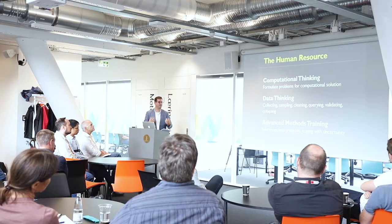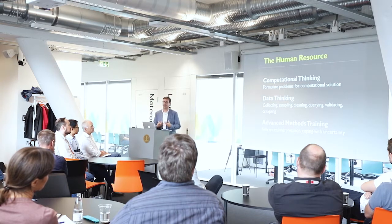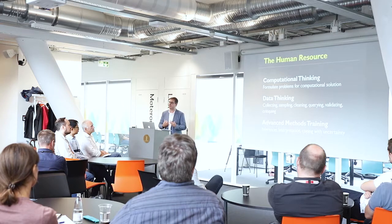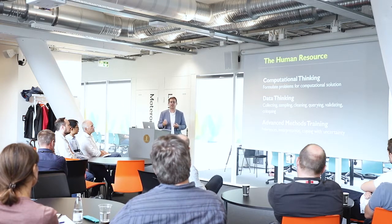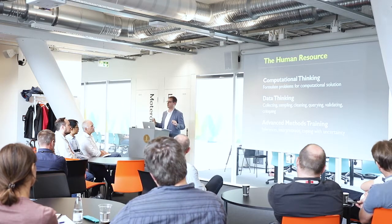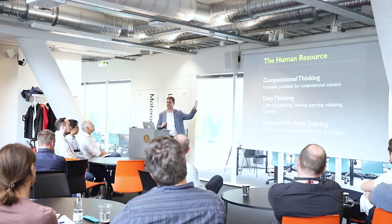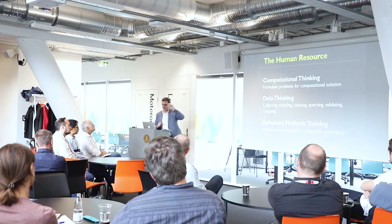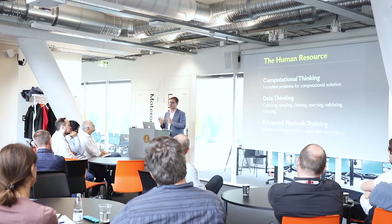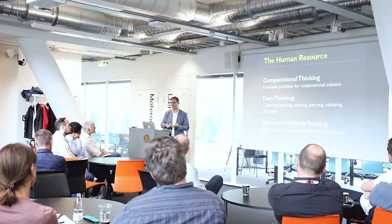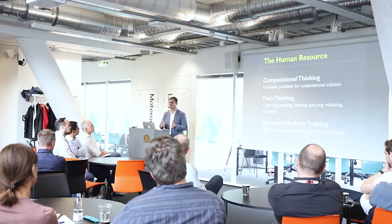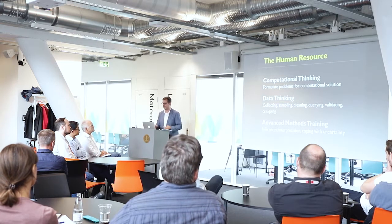Advanced methods would include things like inferencing, causality, and coping with uncertainty — which is a really big one. If you think about using a machine learning model to identify documents to investigate, as the Atlanta Journal-Constitution story did, every model has uncertainty associated with it. How should journalists think about including that uncertainty in their pursuit of a particular story, or their lack of pursuit of that story? How does that factor in?